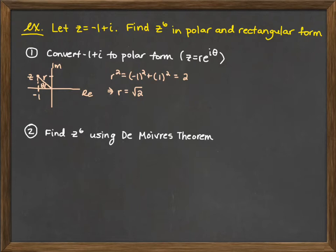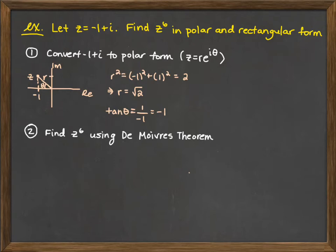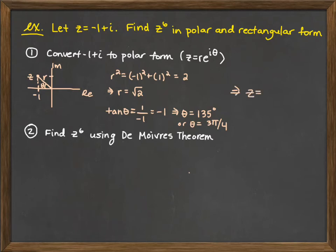Now we find angle θ. The tangent of θ equals 1 over negative 1, which is negative 1, corresponding to negative 45 degrees — that's in the fourth quadrant. But our point is in the second quadrant, so θ equals 135 degrees, or 3π/4. Therefore z equals √2 times e to the (3π/4)i. This is z written in polar form.